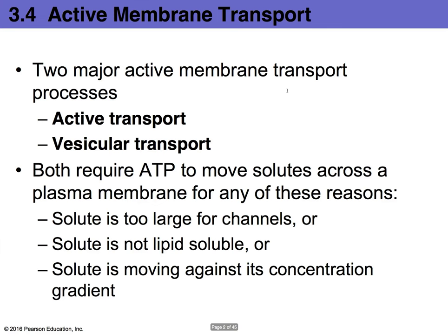Moving on — in the previous chapter we looked at diffusion. Now we're going to be starting off with active transport, meaning that in order to move things into or out of a cell, energy is needed. The two major active membrane transport processes are active transport and vesicular transport. Both of these require energy — that energy being ATP. Without ATP, active transport and vesicular transport cannot take place.